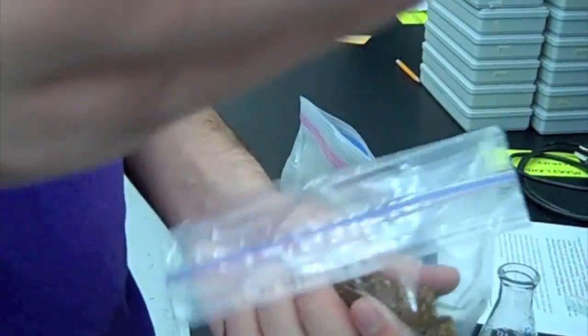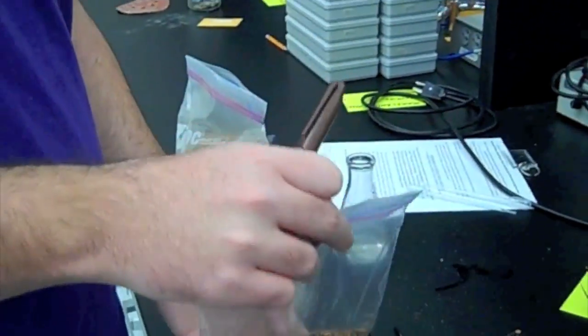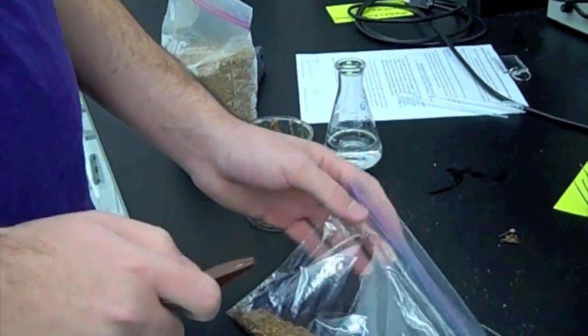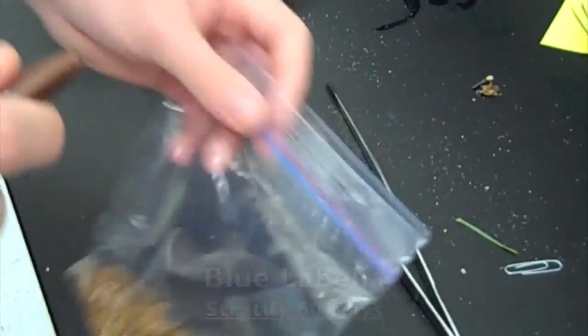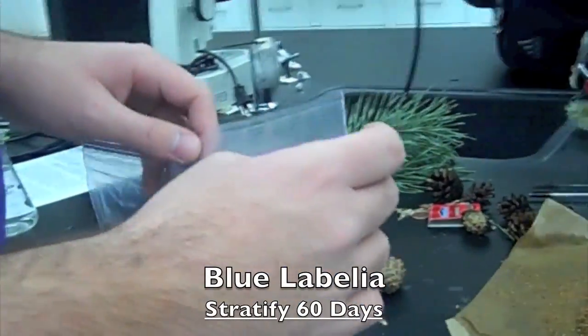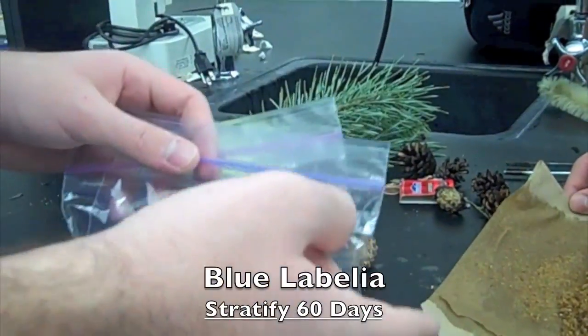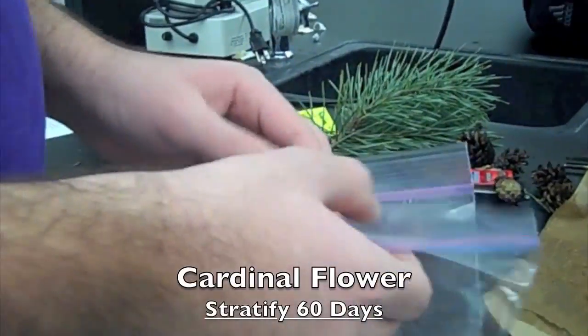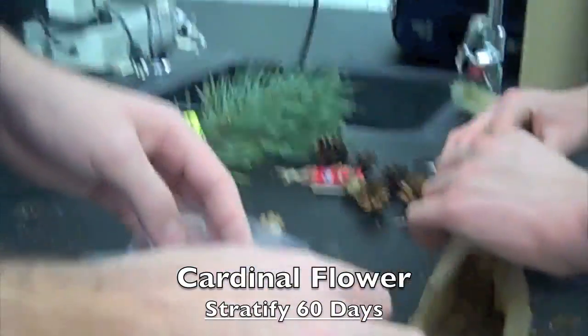Now the other seeds you'll see need to be stratified for a longer time inside of the refrigerator, and that's because the Maryland Senna seeds being scarified have actually been opened more to the moisture, and so they're going to need a much shorter time. The seeds that we need to stratify are going to be our Blue Lobelia and our Cardinal Flower. We're going to continue with the same sand and just do it over, and these both need to be stratified in the refrigerator for 60 days.